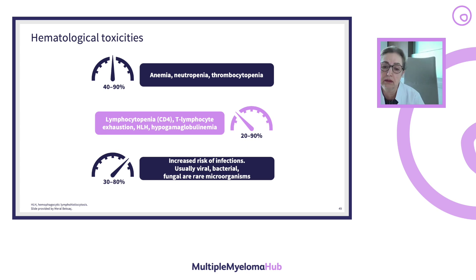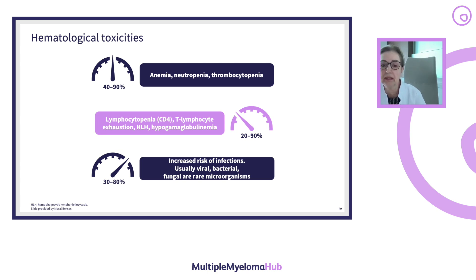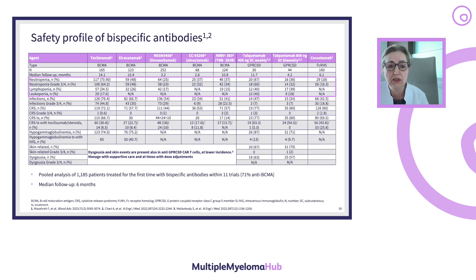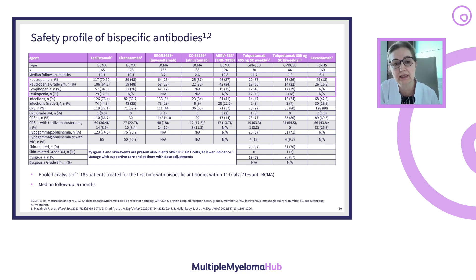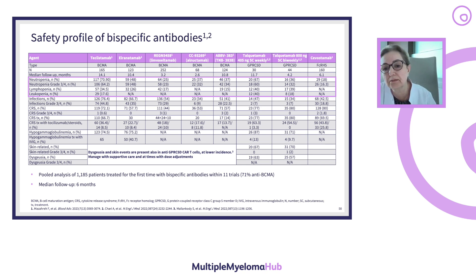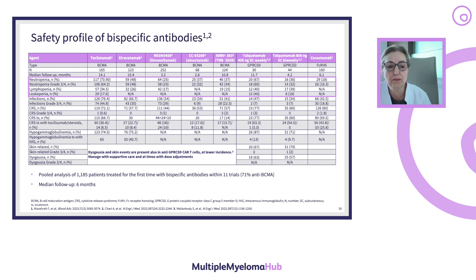In the next slide, we will be comparing different agents in detail. This shows a summary of different T-cell directing agents, starting with Teclistamab on the very left, Elranatamab, the Regeneron product, the Celgene product, the AbbVie product, Talquetamab in two different doses, and Cevostamab.